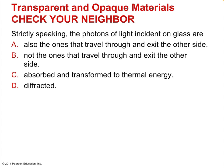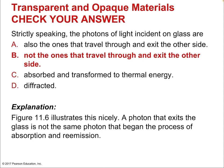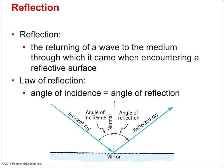Strictly speaking, the photons of light incident on glass are not the ones that travel through and exit the other side — they are absorbed and transformed. As we saw in the figure where atoms gulp up those photons or packets of light waves, it is a separate light wave that is created on the other side.